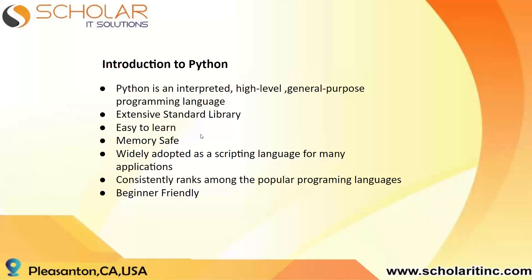Python is an interpreted, high-level, general-purpose programming language. Interpreted means Python requires a translator in the middle to convert whatever you write into something the computer can understand, which makes it a little bit slower compared to other languages. High-level means it's very easy to understand — it's written in human-centric language rather than assembly-style code.